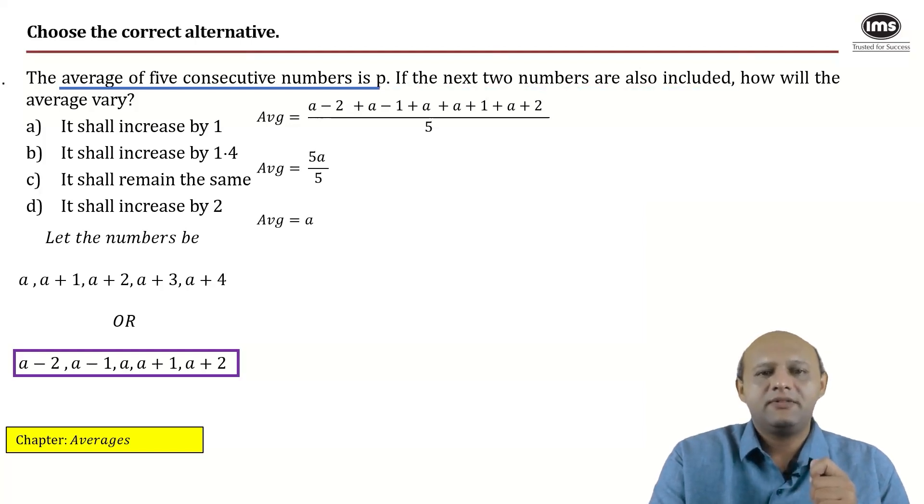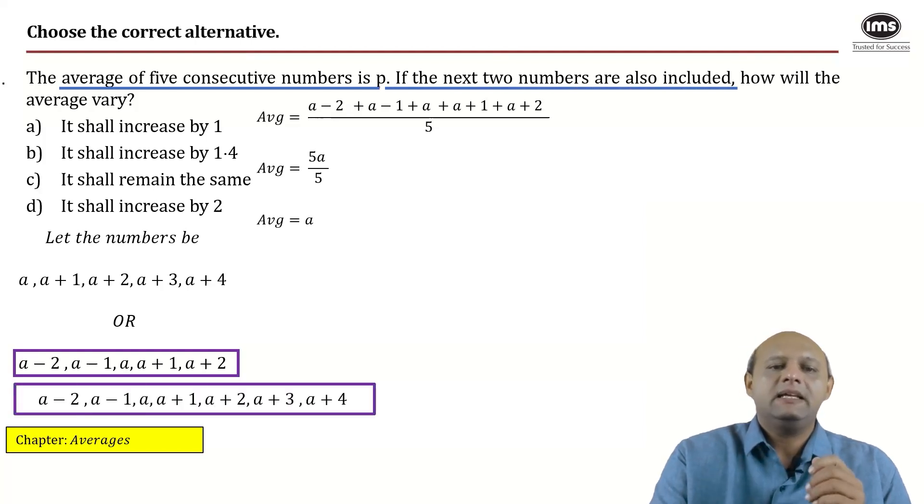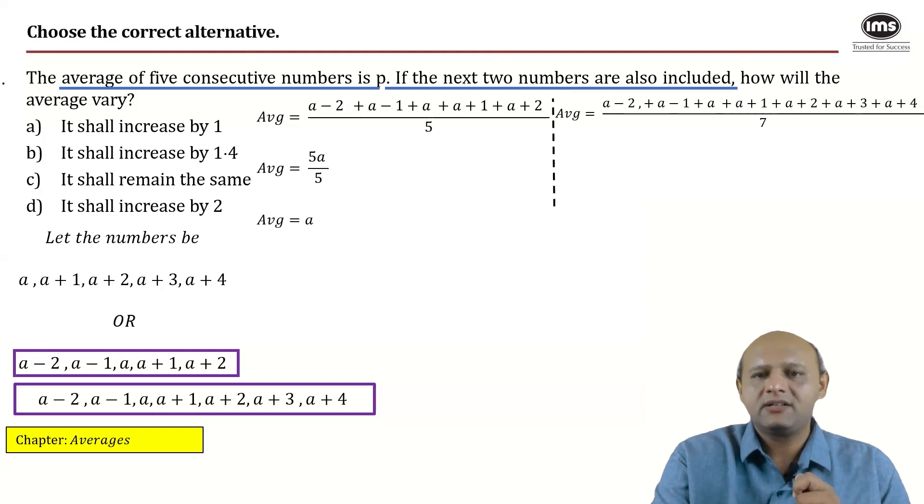Now it further says if two more numbers are included to the list, what would happen? Here we have only a plus 2. The list ends there. Beyond that you have a plus 3 and a plus 4 which are the next two consecutive numbers. How will the average vary?